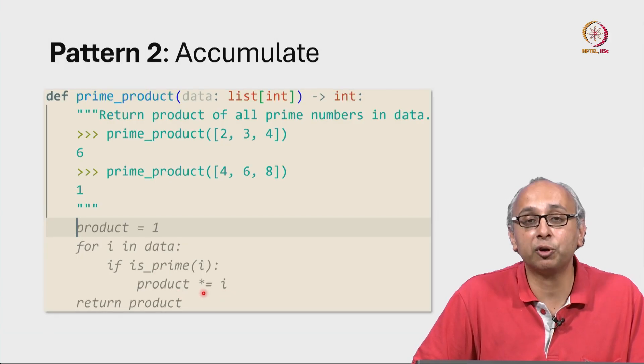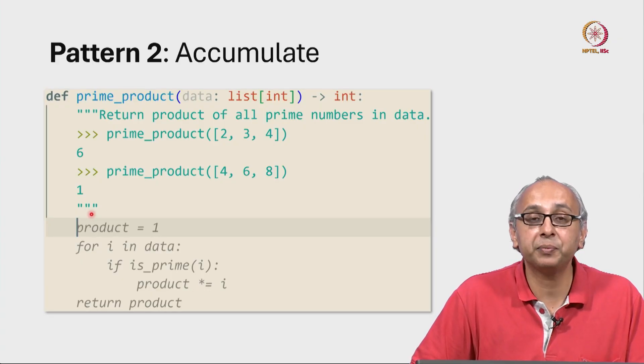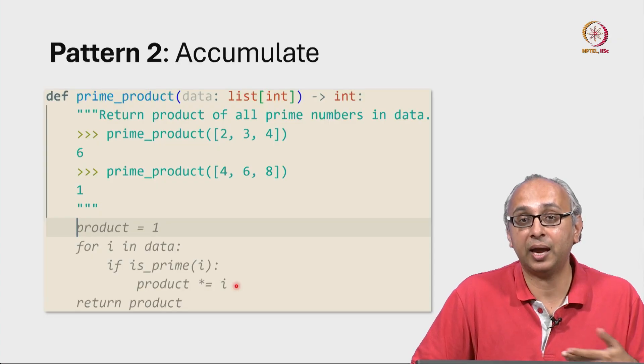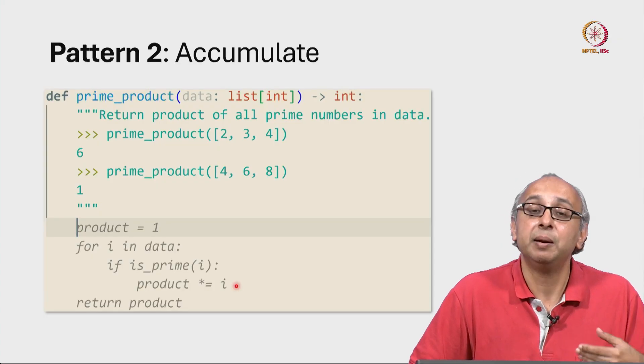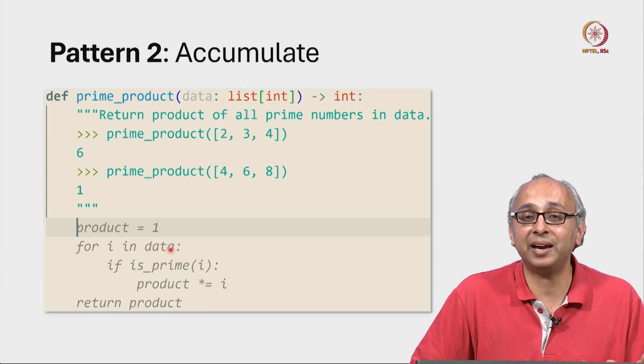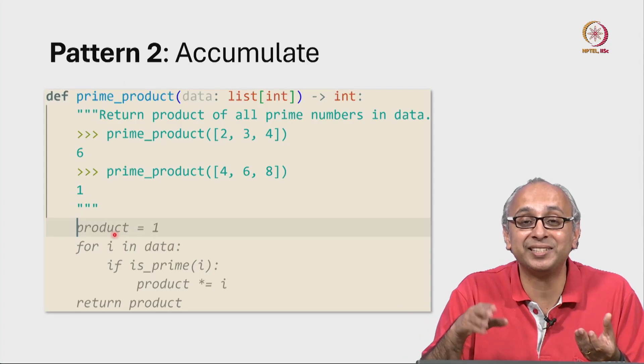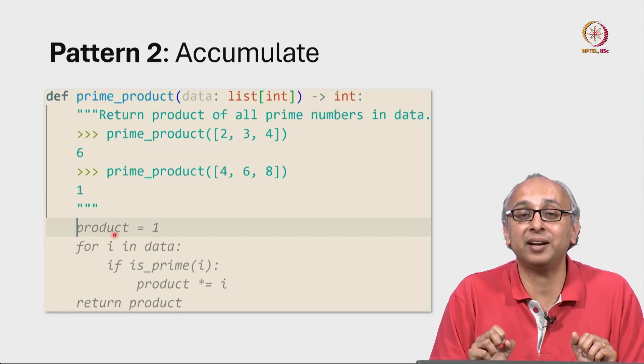Remember, this is shorthand for product is product times i. So this value 1 would now be multiplied with this new item i, and we would get a different product. But then we would continue to the next item. We would continue this, and this product is accumulating the final answer.